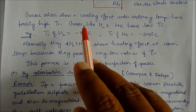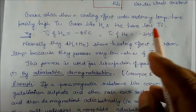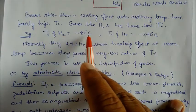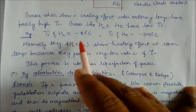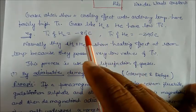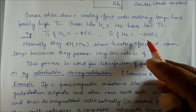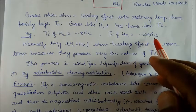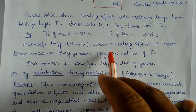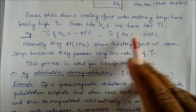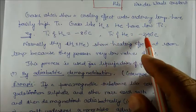Gases which show a cooling effect at ordinary temperatures have fairly high inversion temperatures. However, hydrogen and helium have very low inversion temperatures. The inversion temperature of hydrogen is minus 80 degrees Celsius, and for helium it is approximately minus 241 to minus 242 degrees Celsius. Below these temperatures, expansion produces a cooling effect; above them, a heating effect is observed. That is why hydrogen and helium show a heating effect at room temperature — we cannot observe a cooling effect with them under normal conditions.